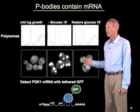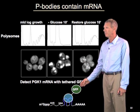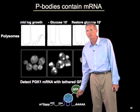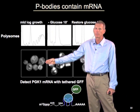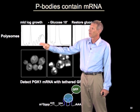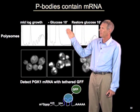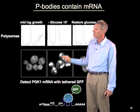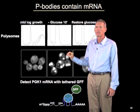P-bodies also contain RNA, which we can detect either by in-situ hybridization or by a technique using GFP tethered to a specific RNA through sequence-specific RNA binding proteins — essentially making a GFP-tagged RNA molecule. When expressed in happily growing cells, the RNA tends to be distributed around the cytoplasm because it is engaged in translation, as shown by the polysome trace where the large peaks indicate mRNAs associated with ribosomes. If we starve the cell for a few minutes of glucose, translation declines dramatically, polysomes disappear, and now these mRNAs accumulate in discrete foci that overlap with markers of p-bodies. So, p-bodies contain RNAs.